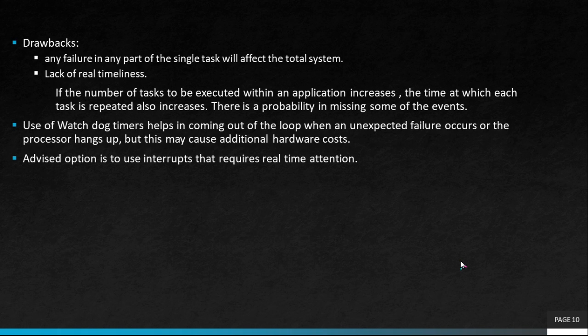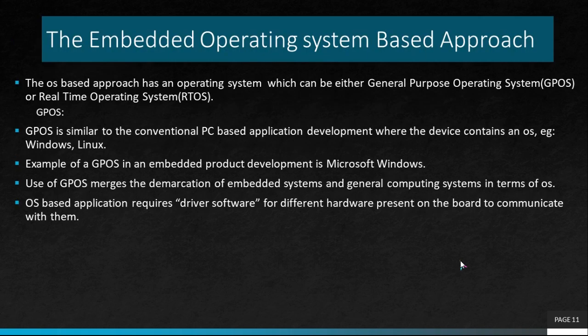If the number of tasks to be executed within an application increases, the time required to execute all those tasks also increases proportionally, and there is a probability of missing certain events. To overcome missing tasks, we use watchdog timers, which help exit the loop when an unexpected failure occurs or when the processor hangs — but this may add additional hardware costs. For real timeliness, using interrupts is the advised option.